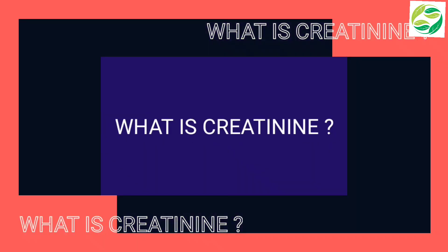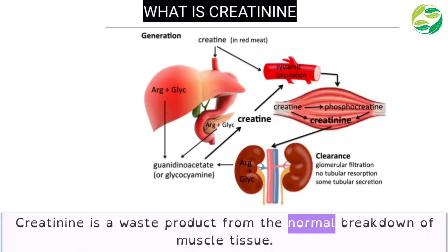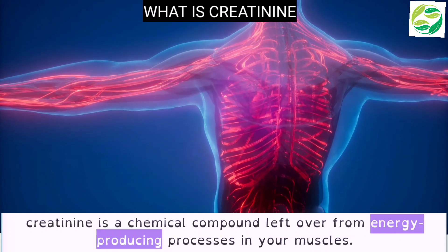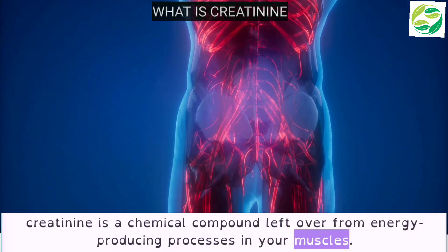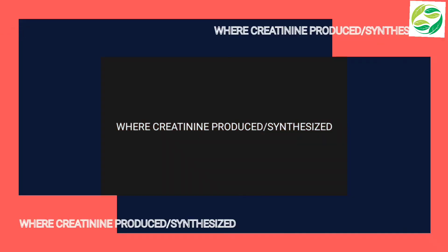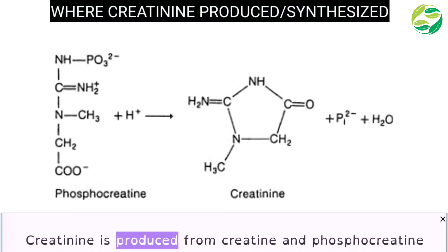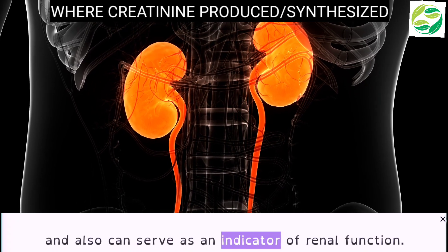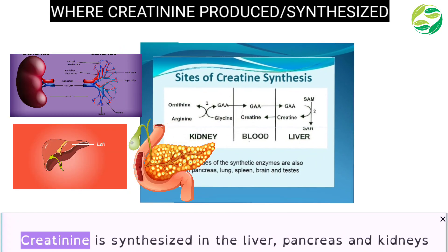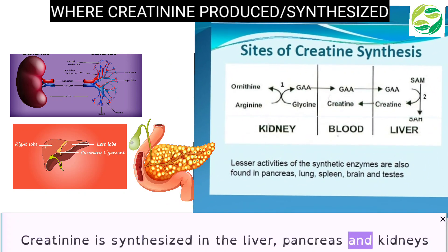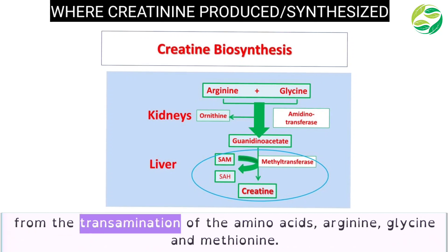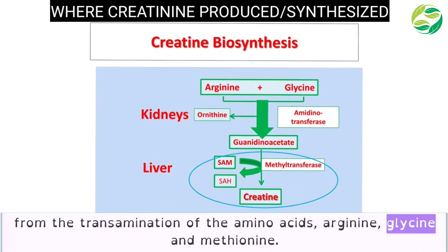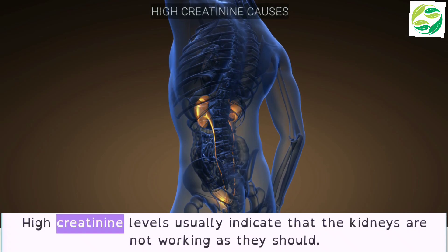Creatinine is a waste product from the normal breakdown of muscle tissue — a chemical compound left over from energy-producing processes in your muscles. Creatinine is produced from creatine and phosphocreatine, and can serve as an indicator of renal function. It is synthesized in the liver, pancreas, and kidneys from the transamination of the amino acids arginine, glycine, and methionine.